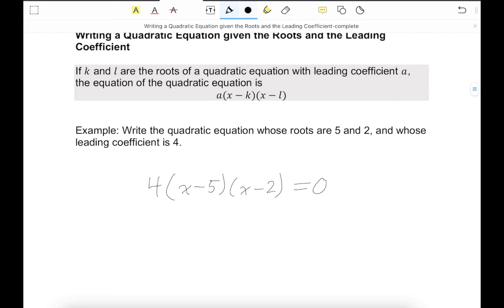Now I can foil this out to get it in a different form. We have this 4 still hanging out here, x squared minus 2x minus 5x plus 10.